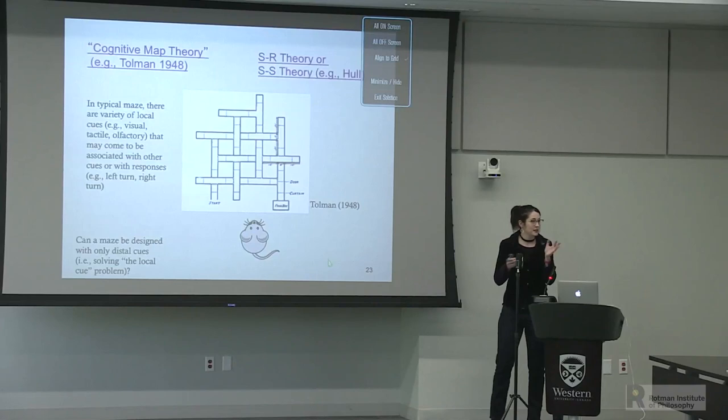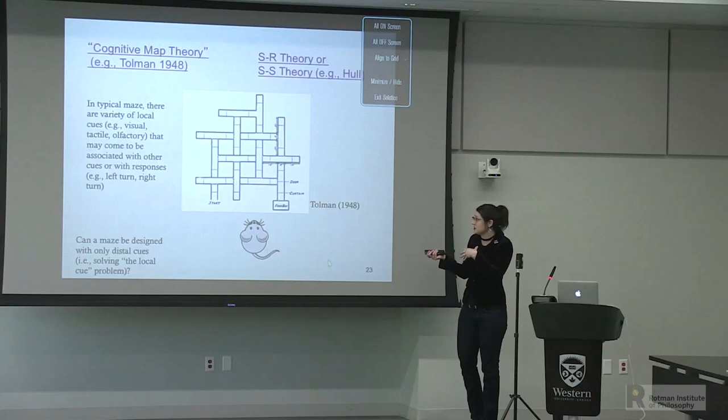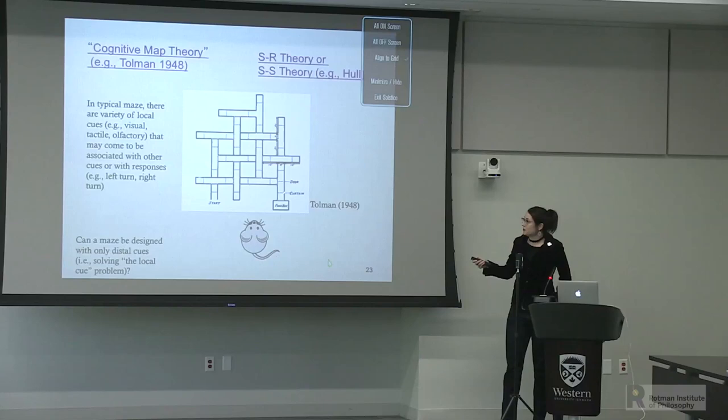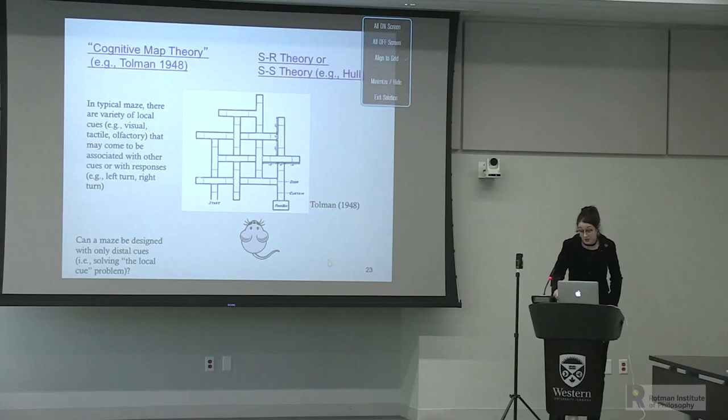At the time, rats were being run in mazes with lots of local cues—corners of the maze, smells, and how things looked in certain places. They might be forming stimulus-response associations or stimulus-stimulus associations, allowing them to better navigate to a hidden food box. The problem was that in experiments like these, the data would not adjudicate between Tolman's cognitive map hypothesis and competing hypotheses. So Morris thought: can we design a maze which will eliminate all local cues so that the rodents are only attending to distal cues?